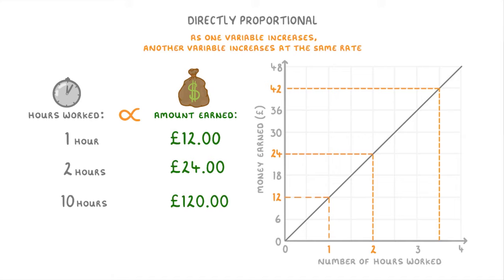And when we plot these both on a graph, it will always look like this, with a straight line that passes through the origin.